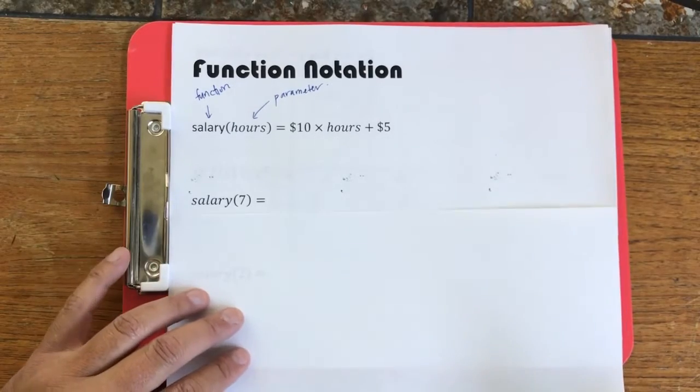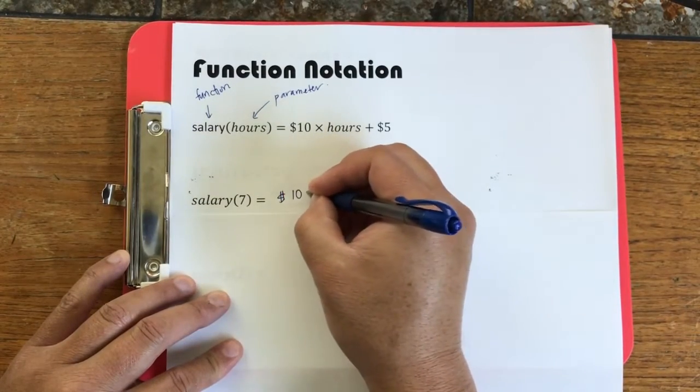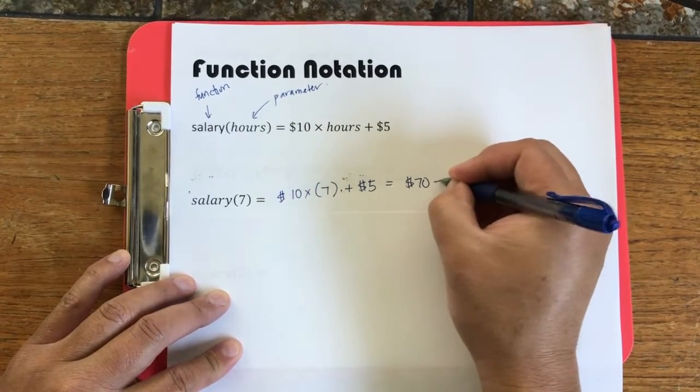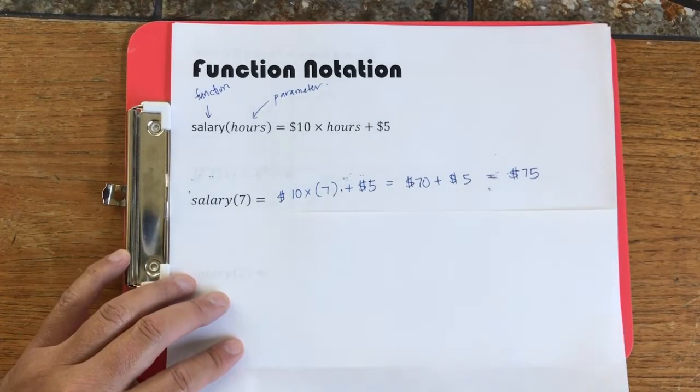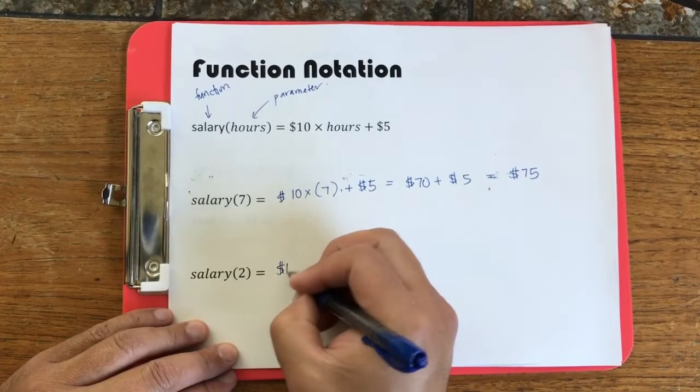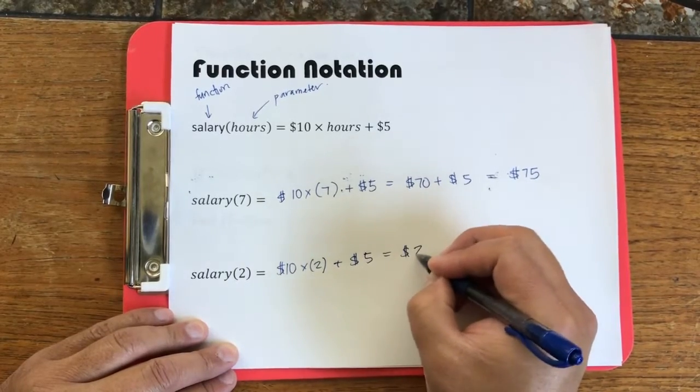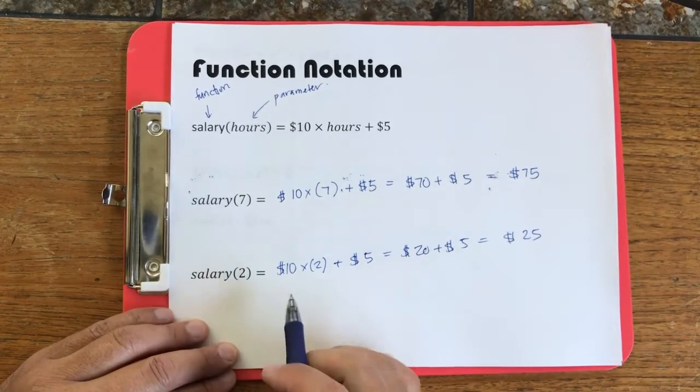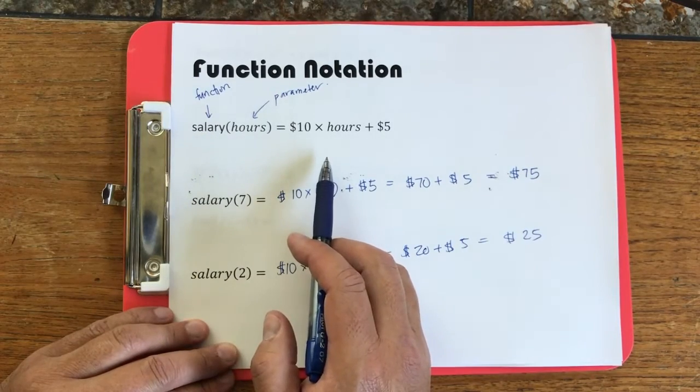Now for example if you worked seven hours, what I would do is I would plug in seven into wherever hours is, wherever the parameter is, and we would see that I would owe you $75. If someone else worked only two hours, I could use the same function to compute their salary and I would owe them $25. This concept is a lot easier to understand when we actually name our operation and it makes some intuitive sense of why it exists.